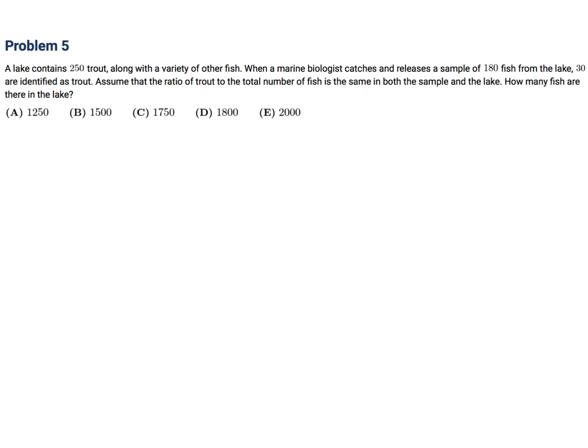A lake contains 250 trout along with a variety of other fish. When a marine biologist catches and releases a sample of 180 fish from the lake, 30 are identified as trout. Assume that the ratio of trout to the total number of fish is the same in both the sample and the lake. How many fish are there in the lake? So this is one of those straightforward ratio questions. 250 over X is what I'll denote the quantity of the other fish. It's the same as this 30 over 150, right? Because a sample of 180 of which 30 were trout, so that means the other 150 are the other fish.